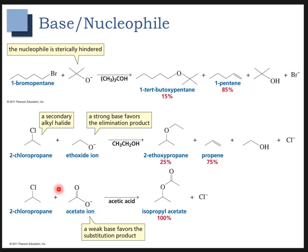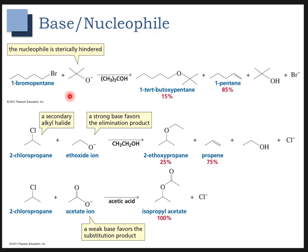In the case of a good nucleophile that is not as strong a base — so it's a weaker base — we're seeing basically 100% substitution. Things that are strong, bulky bases are going to be better at giving us elimination products.